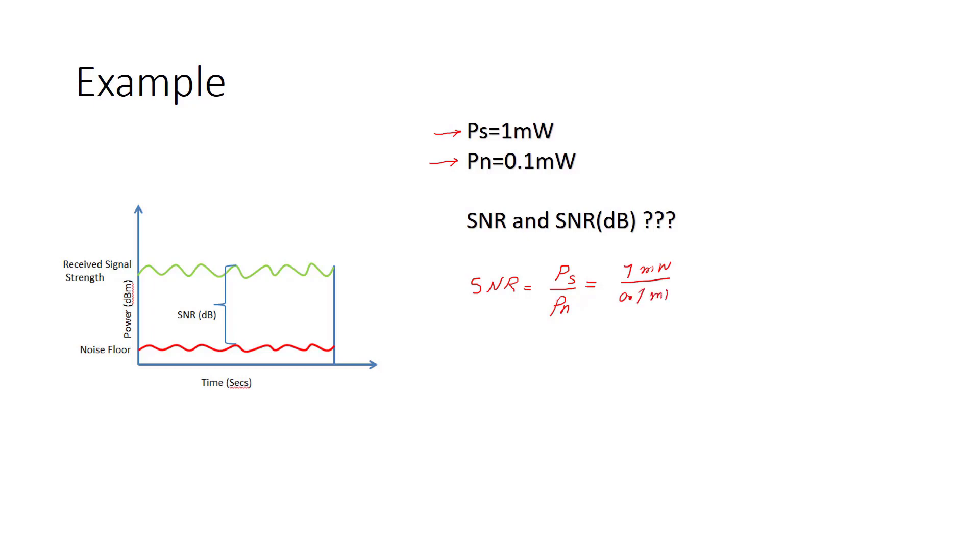So our SNR is signal-to-noise ratio, so P signal over P noise. It should be 1 milliwatt over 0.1 milliwatt. Then it's 10. And if we want to show it in dB, it's 10 log base 10 of SNR. This is SNR dB, which equals to, if this is 10, then this is 1, and again we have 10 dB.